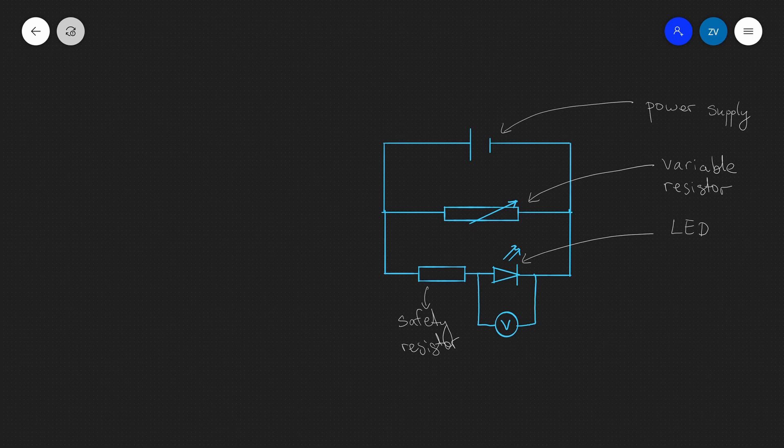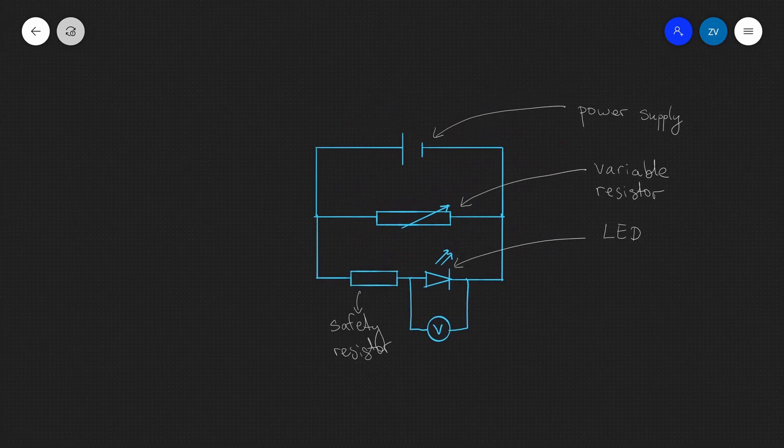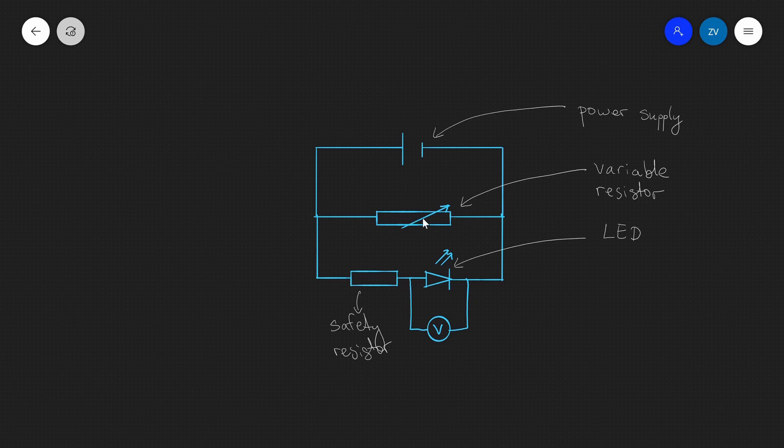So using nothing but electrical equipment and some LEDs, we're going to be able to determine the value of Planck's constant. Now here's the equipment which we're going to be using. We're going to have a power supply, don't really need a lot of voltage for this experiment. We're going to have a variable resistor. We're also going to need multiple LEDs and those need to be of known wavelengths. We're also going to need a voltmeter, and notice that in series to the LED I've added a little safety resistor.